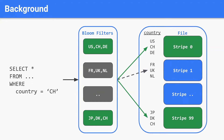For example, when querying for the country CH, we probe all bloom filters. If a filter returns false, we know we can skip that stripe. Otherwise, we need to load and scan the stripe.